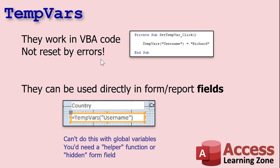Another major benefit is you can use TempVars directly in fields in your forms and reports. You just set it as the control source of a text box and there you go — you'll get your TempVar right there. You can't do that with a global variable; you'd need some kind of a helper function. TempVars does that without needing a helper function. You could also do it with a hidden form field — this is what I used to do way back in the day before TempVars.